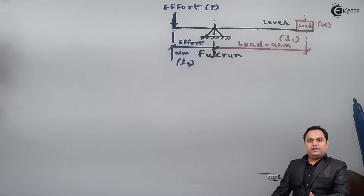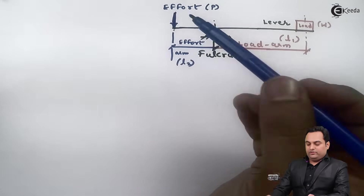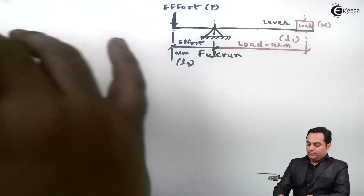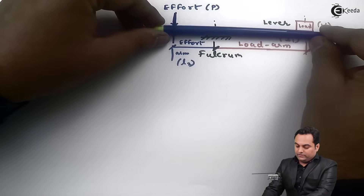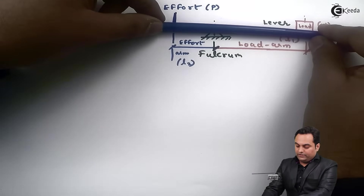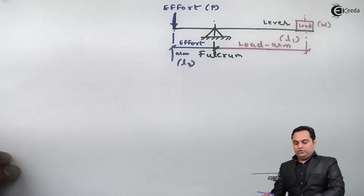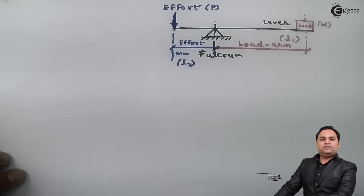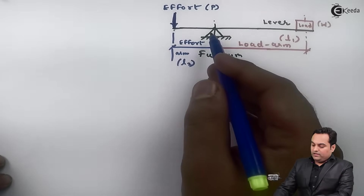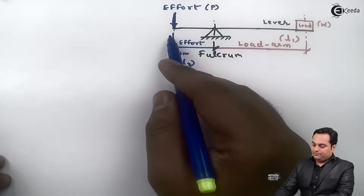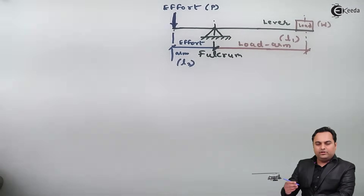If we want to lift the load, we need to apply a downward effort. The lever rotates about the fulcrum — when the effort side moves down, the load side moves up, and the load gets lifted. This is a simple example of a lever.